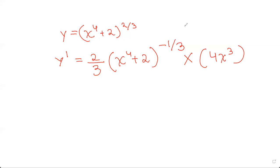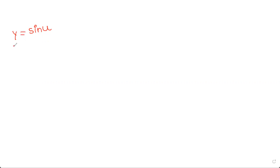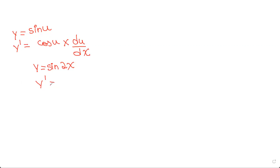Now let me move on to the derivatives of trigonometric functions. If y equals sin u, then y' is cos u times du/dx — that's the chain rule applied. For example, if y equals sin 2x, then y' would be cos 2x times the derivative of 2x, which is 2. So y' equals 2 cos 2x.